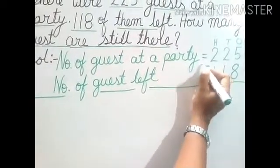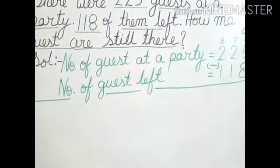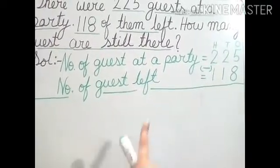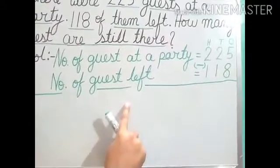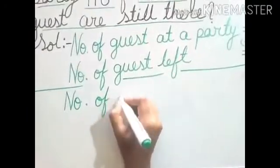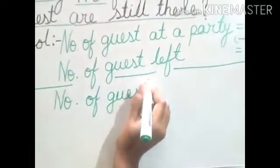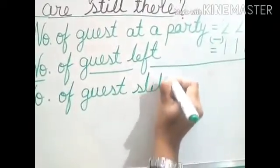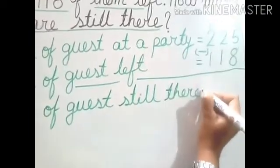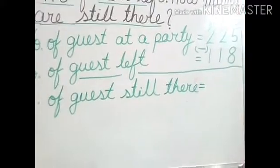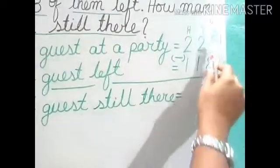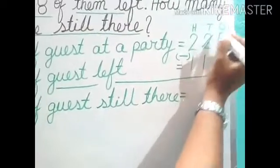We can keep the subtraction sign in brackets also. Now the third statement — what are we going to find out? How many guests are still present there? So we will write: number of guests still there equals. Now let us do the subtraction. Can we subtract 8 from 5? No, we have to take a carry from 2. So this became 1 and this became 15.